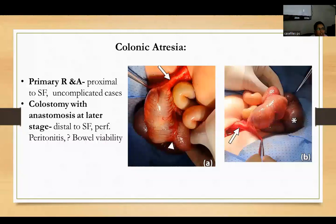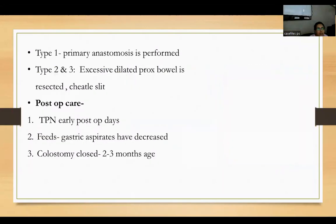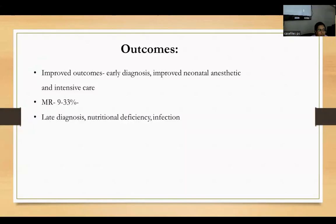For colonic atresia, primary resection and anastomosis is done when the atresia is proximal to the splenic flexure or is an uncomplicated case. Colostomy with delayed anastomosis is done when the atresia is distal to the splenic flexure, or there is perforation peritonitis, or bowel viability is questionable. For type I atresia, primary anastomosis is performed. For type II and III, if the proximal bowel is excessively dilated, it is resected and a chital sleeve can be placed before anastomosis. Postoperatively, TPN is started earliest, gastric feeds begin once aspirate decreases, and colostomy is closed after 2–3 months. Outcomes have improved due to early diagnosis, improved neonatal anesthetic and intensive care. Mortality rate is 9 to 33%, mainly due to late diagnosis, nutritional deficiency, and infection.